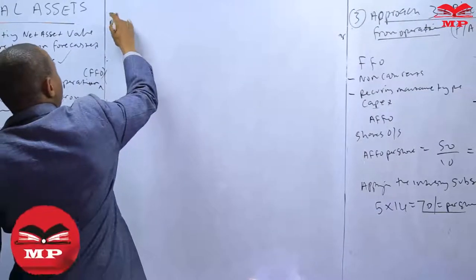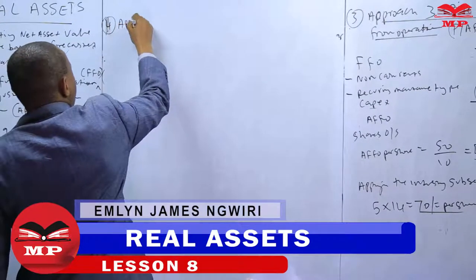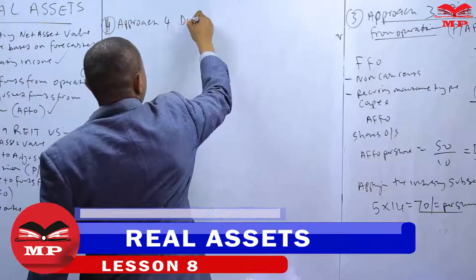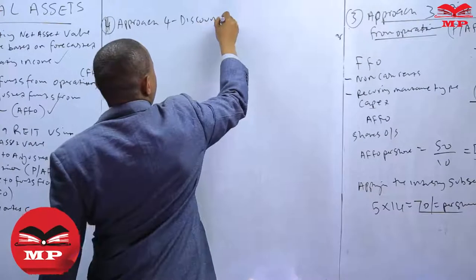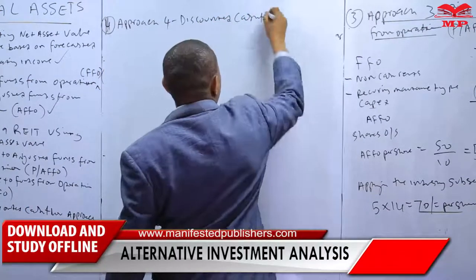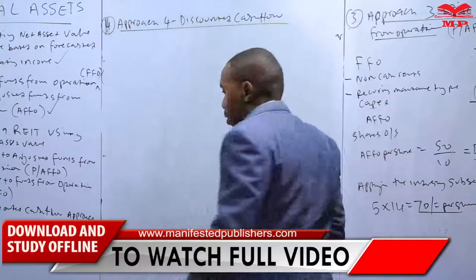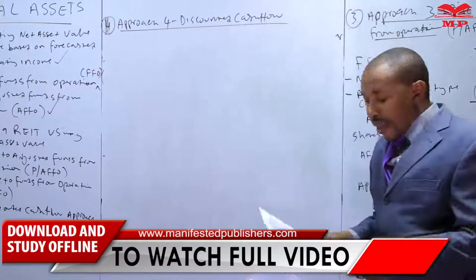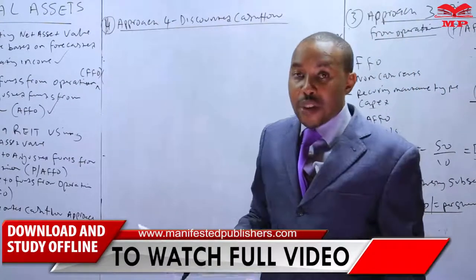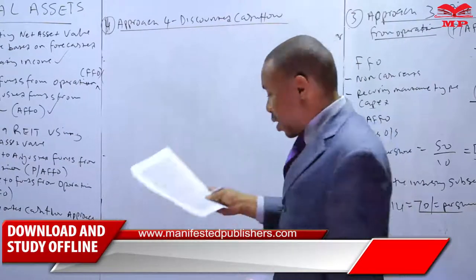Approach 3, number 3 is number 4 sorry, discounted cash flow, discounted cash flow method there. Under the discounted cash flow approach, we have dividends given to us and we need to grow the dividends per year based on a growth rate given to us.